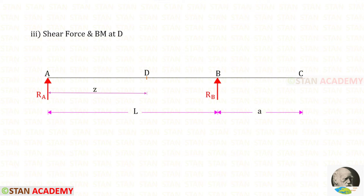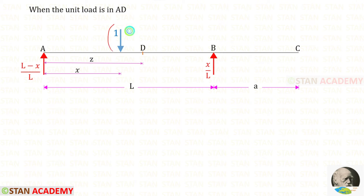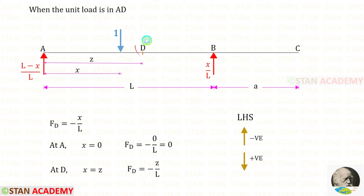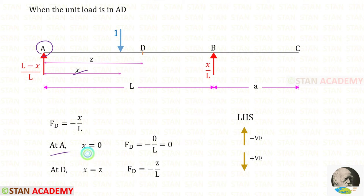Now we are going to draw the influence line diagrams for the shear force and bending moment at point D. Point D is located at a distance of Z from point A. First, let us find the ordinates for the shear force with the unit load between A and D. We can use the left hand side rule. Up to point D, we have only the vertical reaction RB. Since it is acting upwards, it will be negative. At point A, x equals 0, so FD equals 0. At point D, x equals Z, so FD equals minus Z by L.